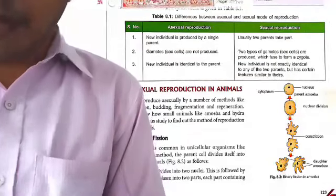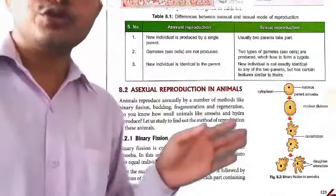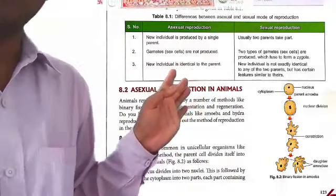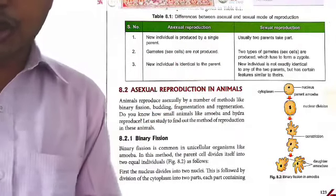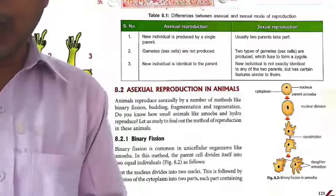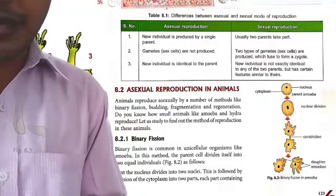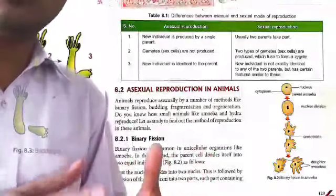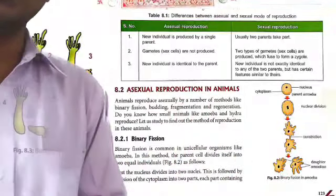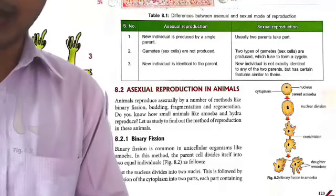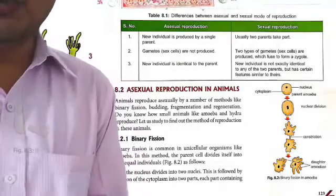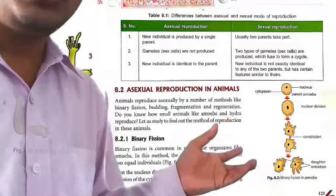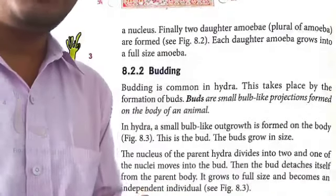This is asexual reproduction. Amoeba is reproduced by binary fission, as shown in figure 8.2. Binary fission is common in unicellular organisms like amoeba. The parent cell divides by itself, producing 2 daughter cells. First the nucleus divides, then the cytoplasm and cell membrane, and after that the amoeba divides into two cells.